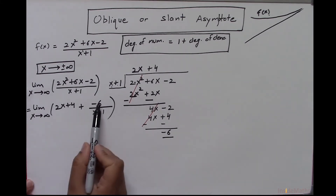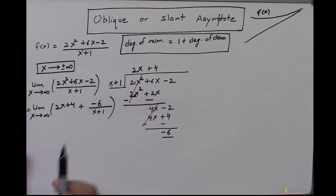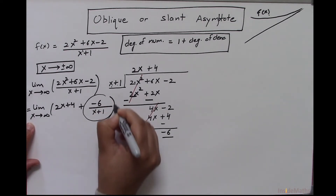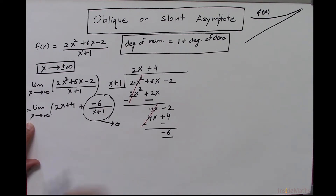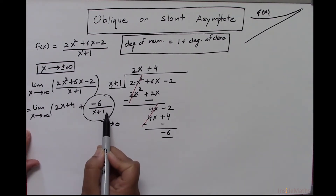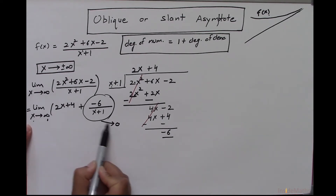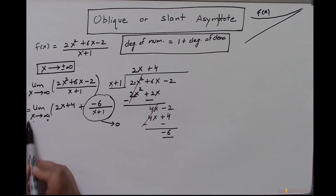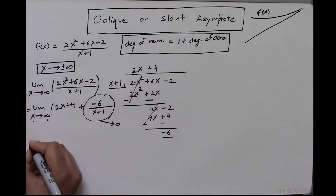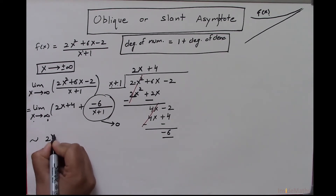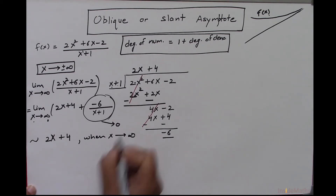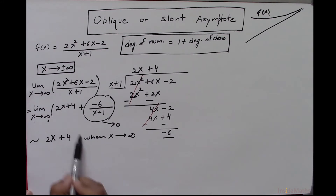Now it's easy to simplify. As x approaches infinity, the term -6/(x + 1) approaches 0, because the denominator is getting arbitrarily large. So when x approaches infinity, this expression is equivalent to 2x + 4, which is a linear expression — a line.